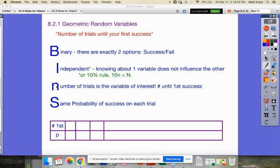So it's still binary, two options, success or failure. It's still independent. Knowing about one variable does not influence the other. And if it's not technically independent, like you're drawing from a deck of cards or sampling from a population without replacement, then as long as your sample size does not exceed 10% of the population, you're fine. Here, the number of trials is not fixed. It's the variable that we're trying to measure. How many trials does it take before your first success? And it is still the same probability of success on each trial.